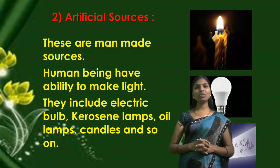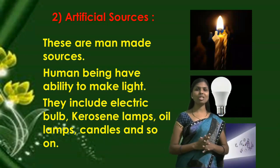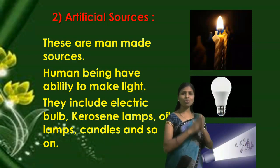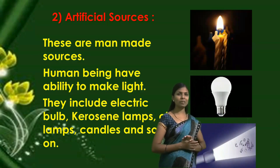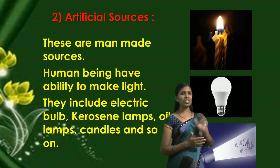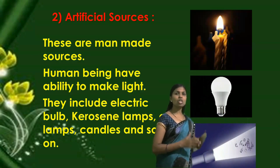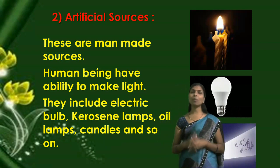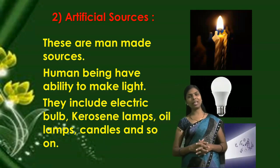Now we are going to discuss about artificial sources of light. Here I have shown you some examples of artificial light, like a candle, electric bulb, and torch. These are examples of artificial sources of light.